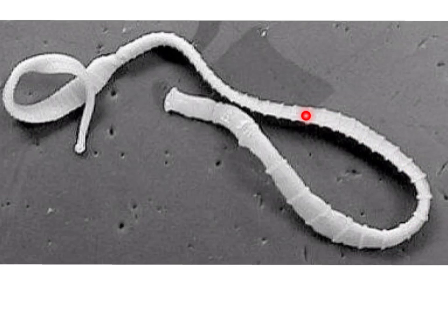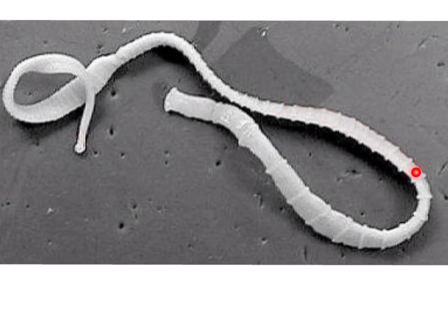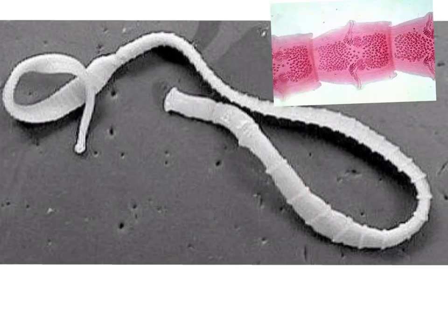The worm has gone for simplicity — all the proglottids or segments are pretty much identical, with mature ones at the end, immature ones near the scolex or head. One simplification is that it has eliminated the need for sensory organs, because it lives in a pretty stable, dark environment — so there's no point in having eyes. This thin ribbon structure gives it a large surface area to volume ratio, so it can absorb food over its entire surface. Another adaptation is in its reproduction.